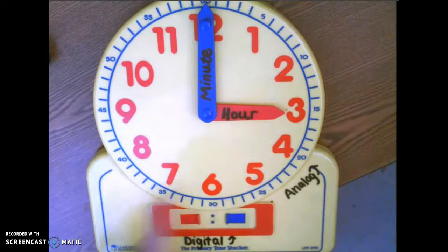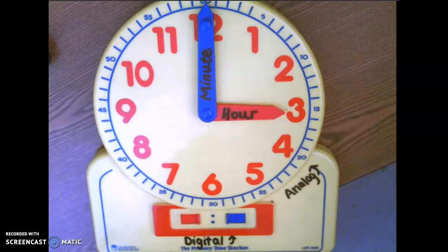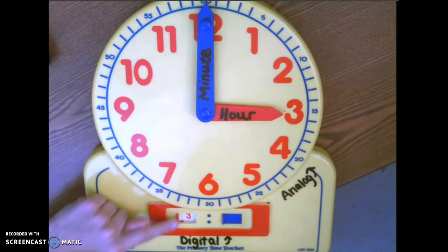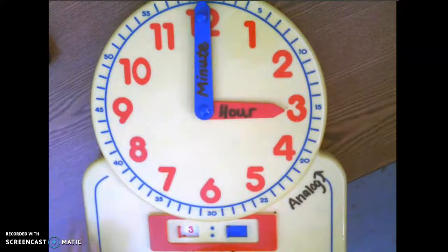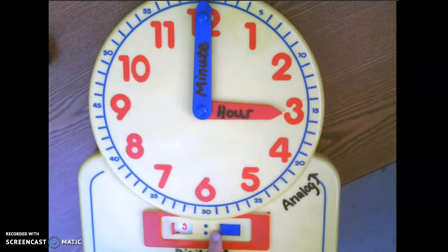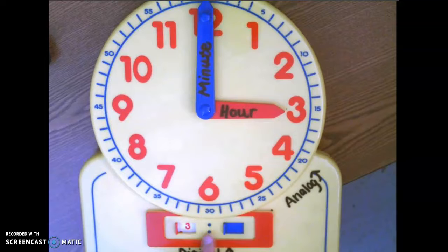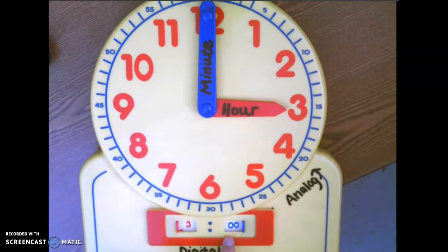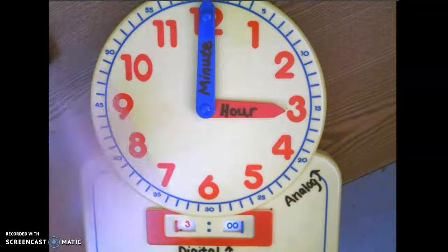Down here is our digital clock. The first number that you see tells us the hour. So right here, this is showing us the number three because it's in the three o'clock hour. And then we have our colon right here.